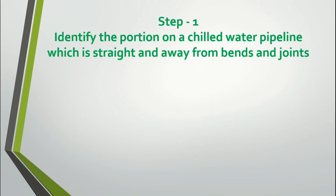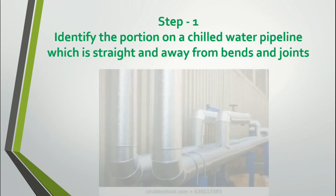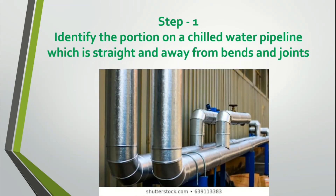Step 1: Identify the portion on a chilled water pipeline which is straight and away from bends and joints. In a typical chiller system, the left side is the inlet chilled water loop and the right side is the outlet chilled water flow. You need to identify a portion on the chilled water line which is straight and has some distance from any bend or joint.